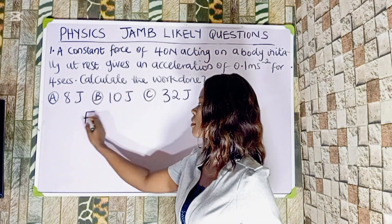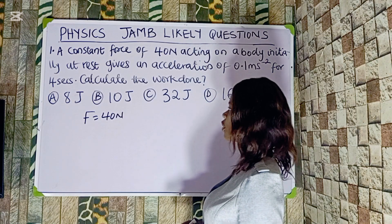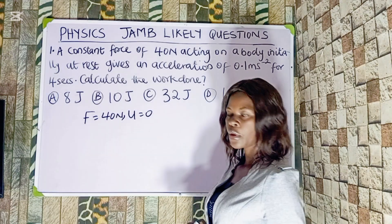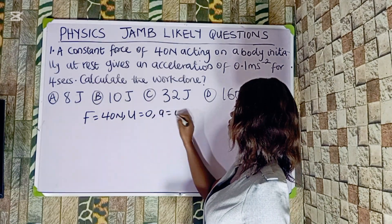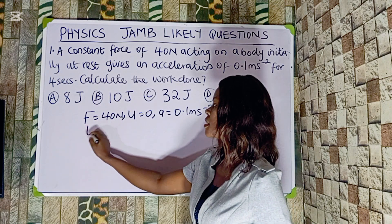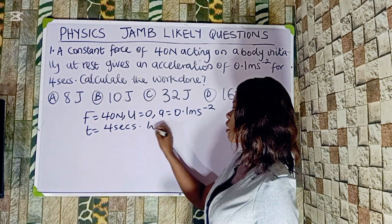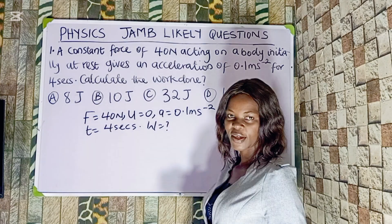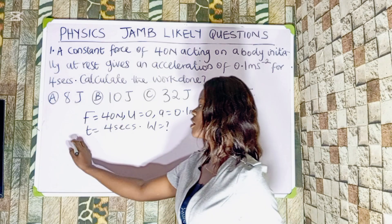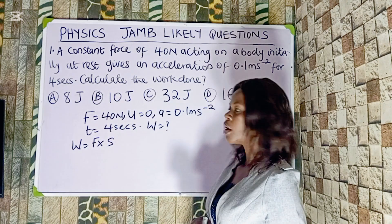Before we solve this question, let us set our parameters. We are given a constant force F of 40 newtons, acting on a body initially at rest, meaning the initial velocity u equals zero. It has an acceleration a of 0.1 meters per second squared, and the time t is 4 seconds. We are looking for work done. Remember that work done equals force times distance.